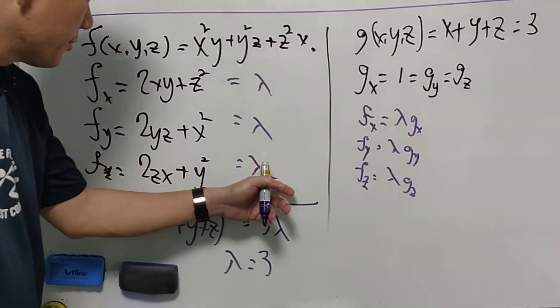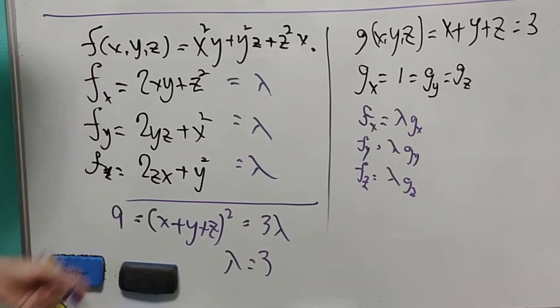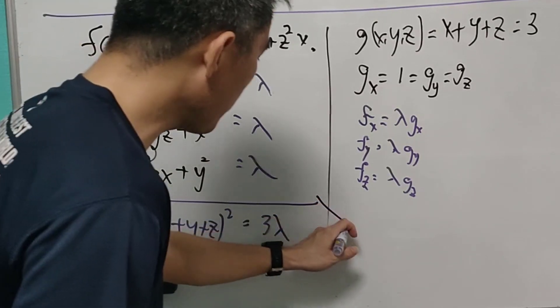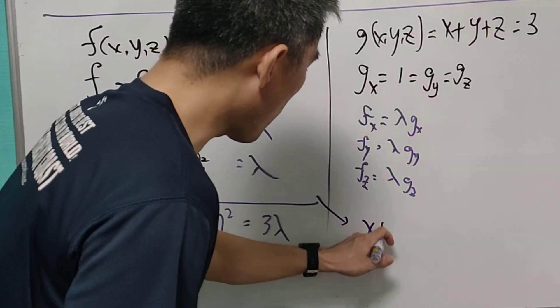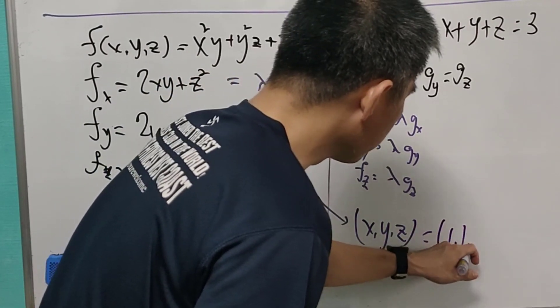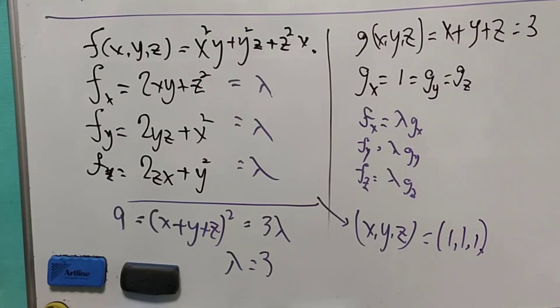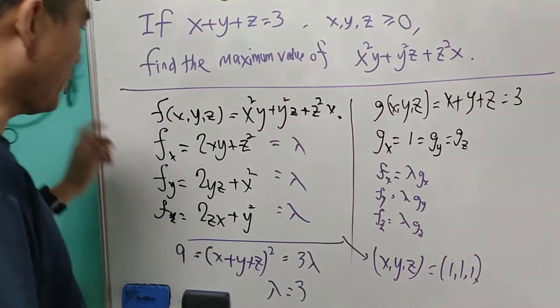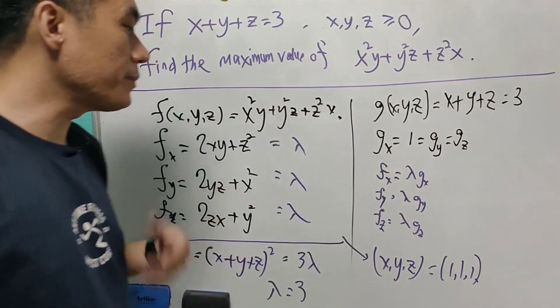And since each of these equal to 3, after we solve this system of equation, then we will have a unique solution: x, y, z has to be equal to 1, 1, and 1. And since x, y, z equals to 1, 1, and 1, then the value of this expression will be equal to 3.